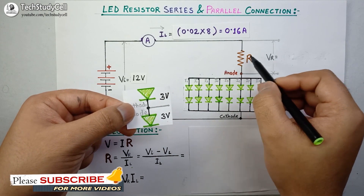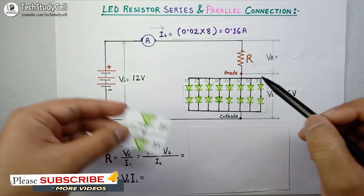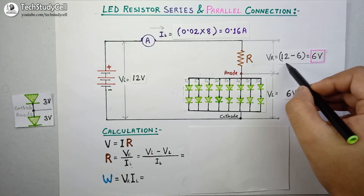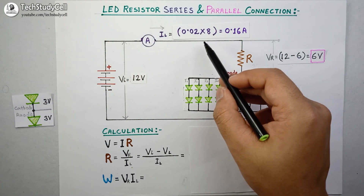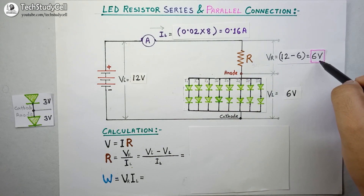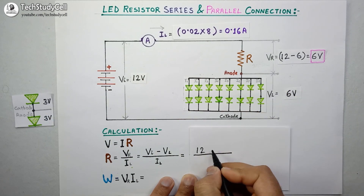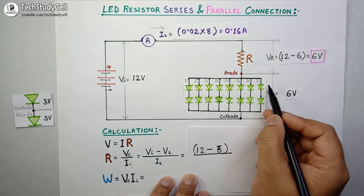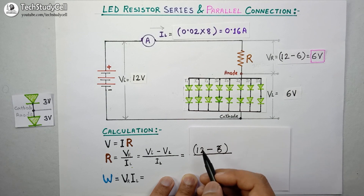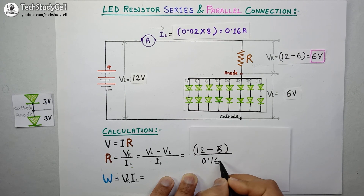Now we will calculate the voltage drop across the resistance. The voltage drop across each string is 6 volts and the input voltage is 12 volts, so the voltage drop across the resistance is 12 minus 6, which equals 6 volts. We know the current through the resistor is 0.16 amperes and the voltage drop across it is 6 volts, so we can now calculate the resistance value for this circuit. The voltage drop across the LEDs is 6 volts and the current through the resistance is 0.16 amperes.